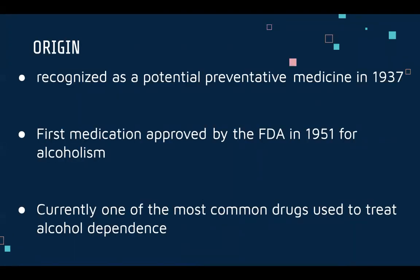Disulfiram was first discovered as a potential medicine for alcohol in 1937. The way this came about was it was used as an antioxidant in a rubber factory, and the workers there discovered they became ill after being exposed to it, with heightened symptoms after drinking alcohol. After this was discovered, more research was done, and finally in 1951 it was approved by the FDA. It started to become popular in the 1950s and was actually one of the first medications approved by the FDA for alcoholism, and is currently one of the most common drugs to treat alcohol dependence today.